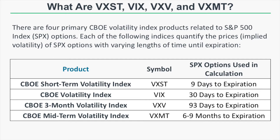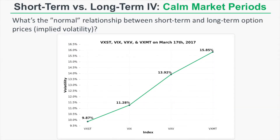Let's look at the normal relationship between all four volatility indices. During calm market periods, which is most of the time, implied volatility as quantified by the VIX is generally very low, and we usually see lower implied volatility in near-term options and higher implied volatility in longer-term options. Looking at the four indices on March 17, 2017: VXST is at 9.87, VIX is at 11.28, VXV is at 13.92, and VXMT is at 15.85.